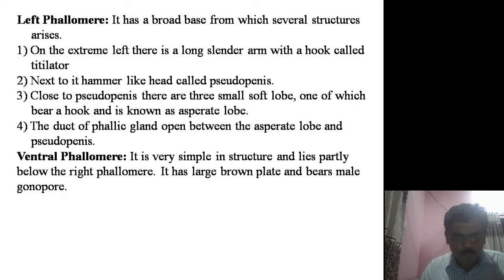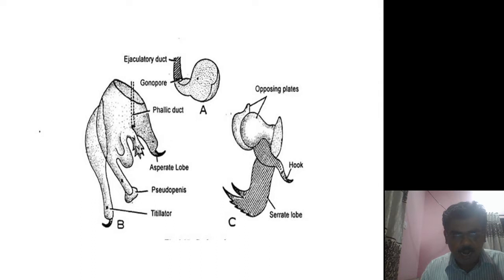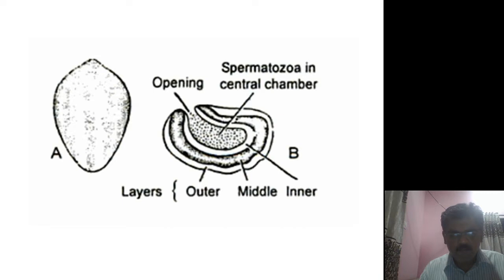Between the pseudopennis and asperate lobe there is an opening of the phallic gland. The third part is the ventral phallomere — it is a very simple structure that lies partly below the right phallomere. It has a large brown plate with an opening called the male gonopore, which is attached to the ejaculatory duct, as shown in figure A.